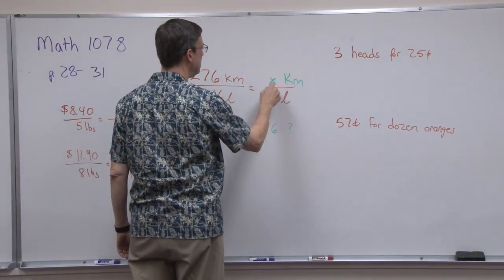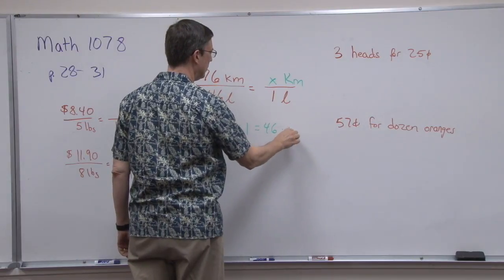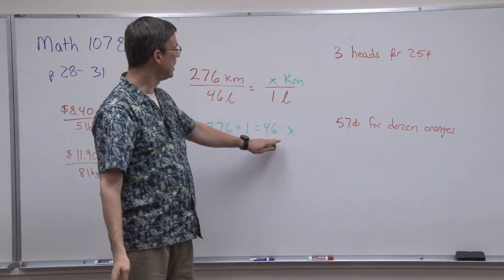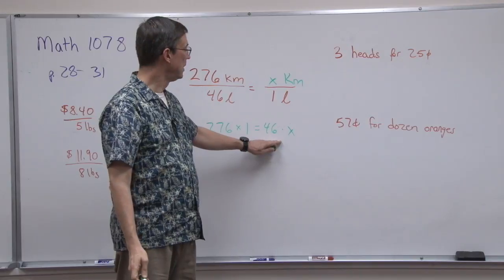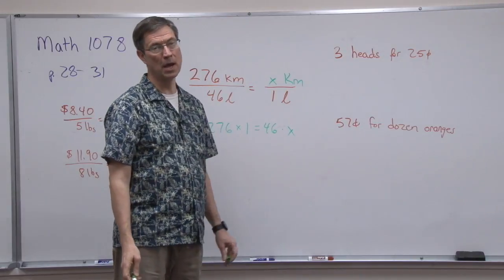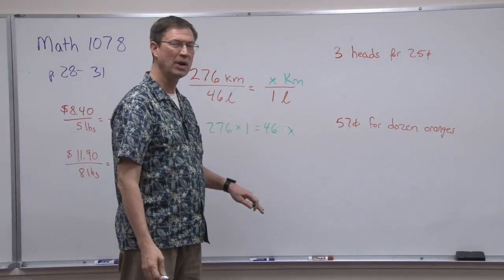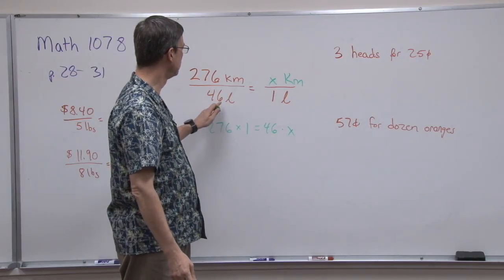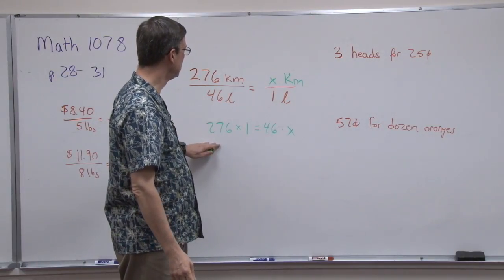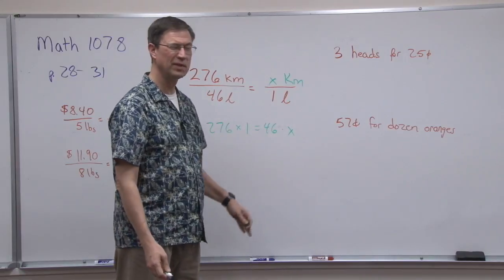Now we have to undo the 46 times X. Notice I did it on the right, and I think a lot of times in the pace they do it on the left, so 46X would be over here, the 276 is over here. It's the same either way.